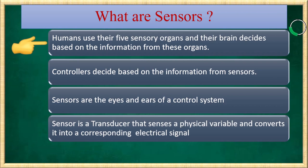We humans use our five sensory organs such as our eye, our tongue, our ear, and our brain then decides based on the information from those organs. In industrial process also, controllers decide based on the information from the sensors. Sensors are therefore the eyes and ears or the sense organs for an industrial control system. As a brief definition, sensor is a transducer that senses a physical variable and converts it into a corresponding electrical signal. Transducer here is a generic term that converts one energy state to another energy state. But a sensor converts a physical variable from any energy state to its electrical signal.